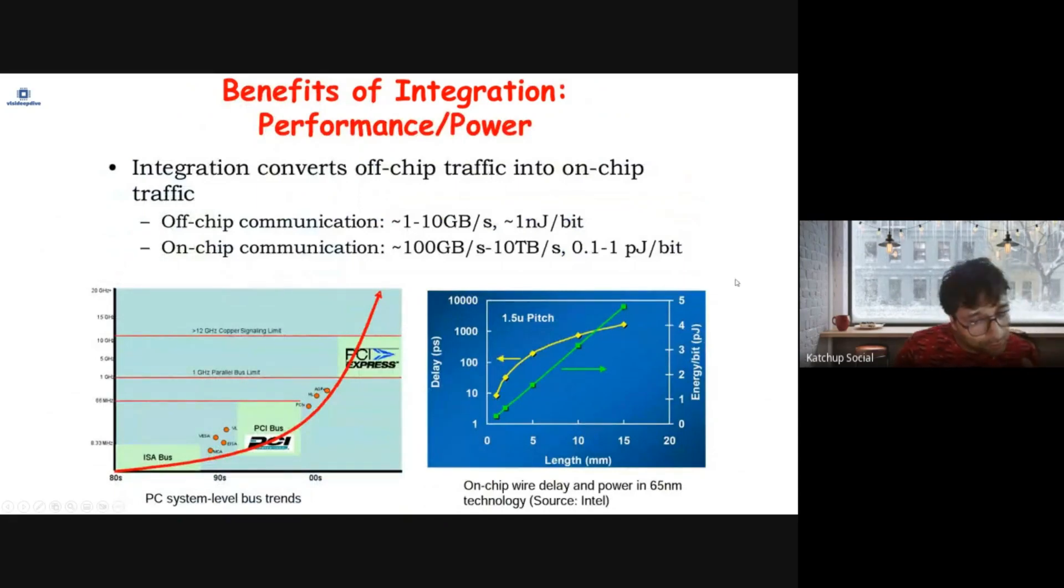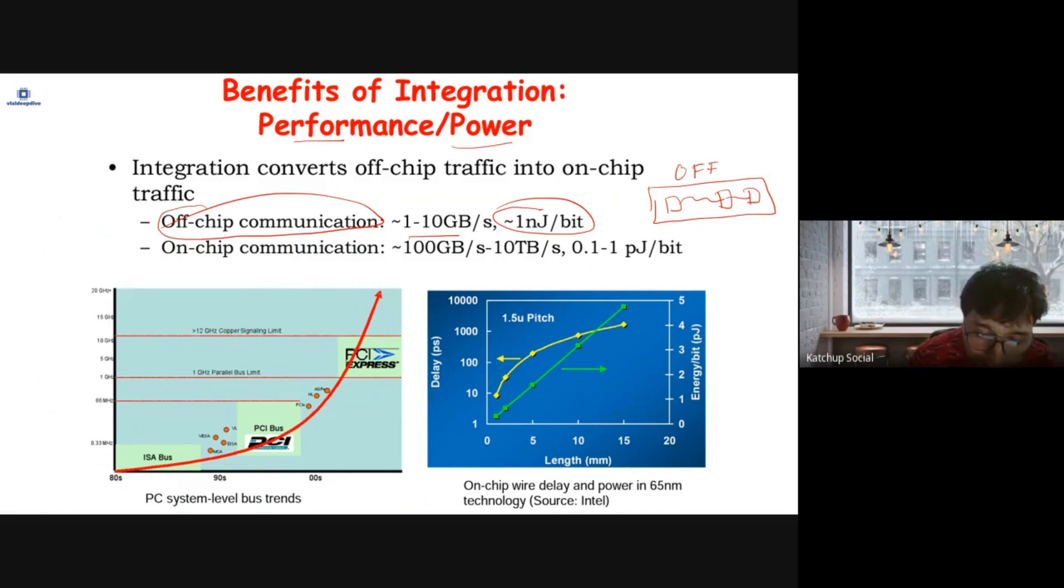Benefits of integration are again performance and power. When there are multiple components on a board, these are outside the chip connecting through wires on a board. It's known as off-chip communication because the communication is between different chips. This is typically slow, so you get slower performance. This consumes more power, so you have more power-hungry devices.